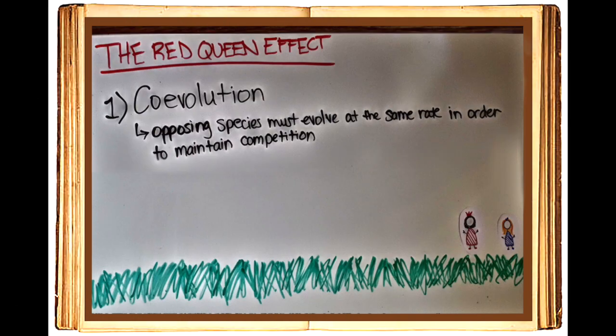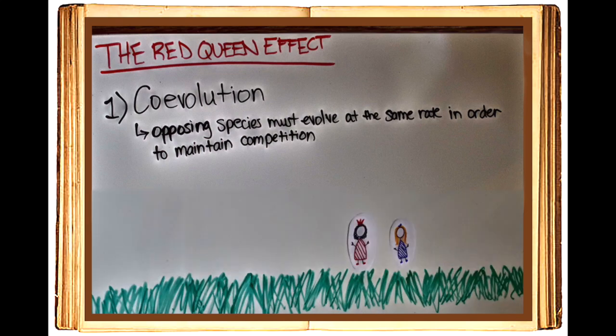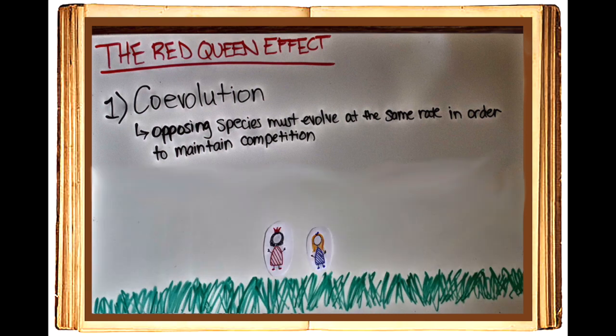Co-evolution: opposing species that exist in the same habitats must evolve at the same rate in order to maintain competition. If the prey begins to evolve faster, so must the predator. This cycle repeats until it reaches the point at which a species can no longer keep up with its opponent.